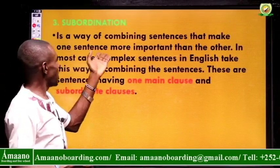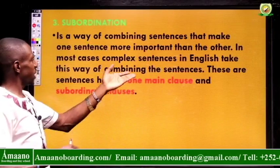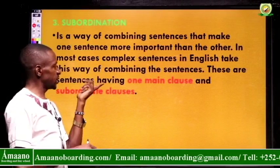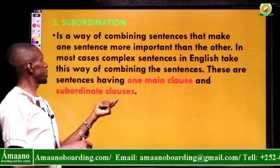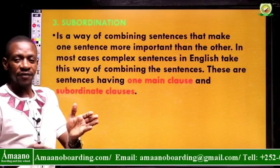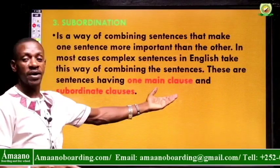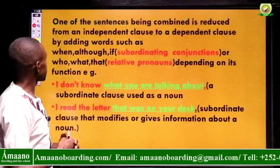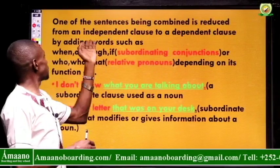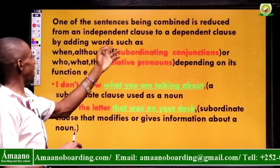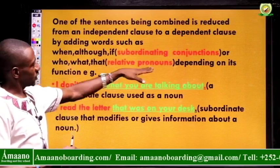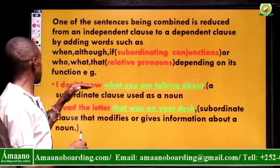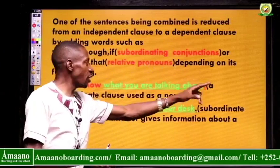The third method is subordination. It is a way of combining sentences that makes one sentence more important than the other. In most cases, complex sentences in English use this way of combining. These are sentences having one main clause and a subordinating clause. The subordinate clause gives information about the main clause and is attached to it. The main clause makes sense on its own; the subordinate clause does not. One of the sentences is reduced from an independent clause to a dependent clause by adding words such as 'when,' 'though,' 'if' — these are subordinating conjunctions — or 'who,' 'what,' 'that' — these are relative pronouns.